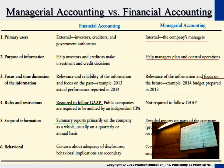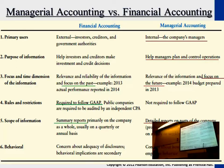The third category is the focus and time dimension. Financial accounting statements are done at year end — after a year of business operations, we summarize the reports into four statements. Managerial reports can be more detailed and are prepared upon management's request — on a daily basis, weekly basis, or whenever the manager requests.